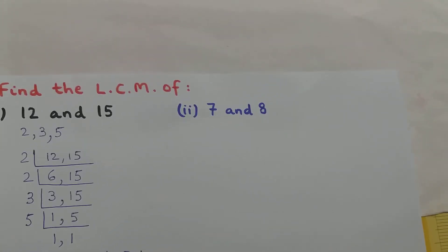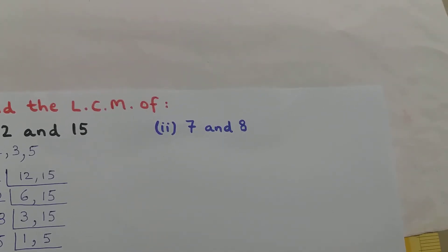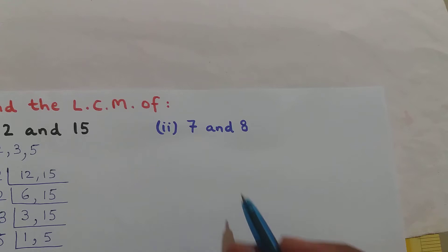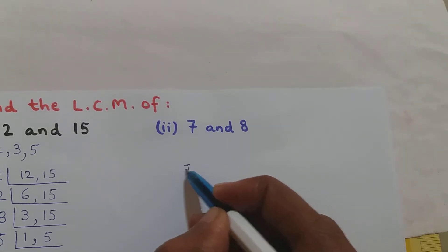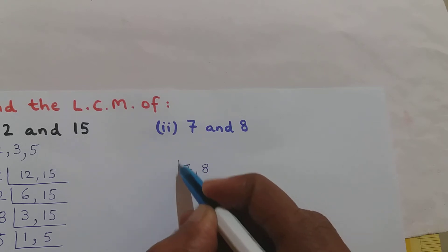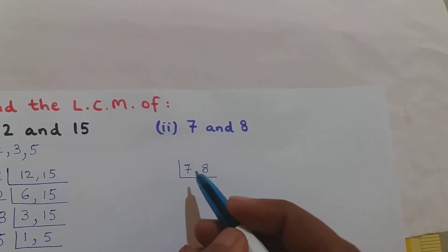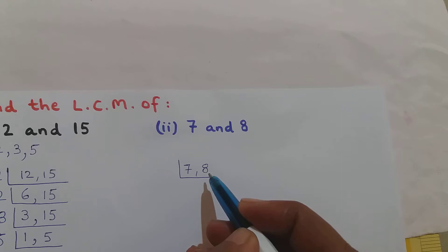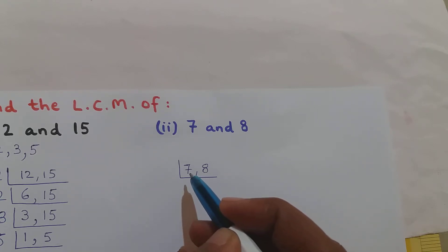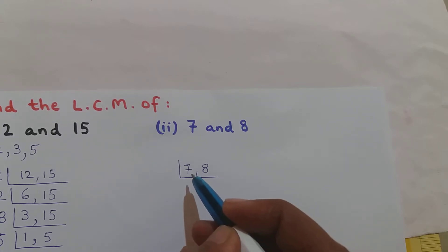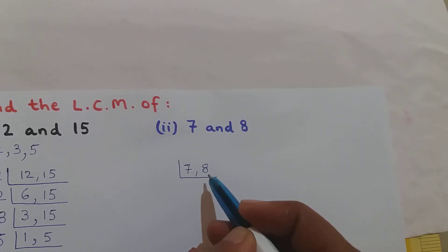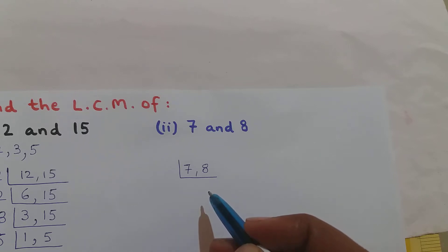Now let us do question number 2: find the LCM of 7 and 8. I will keep on dividing 7 and 8 by the prime numbers till I convert both of them to 1.